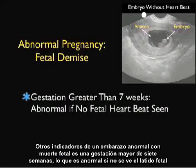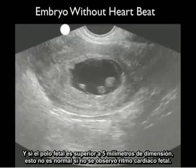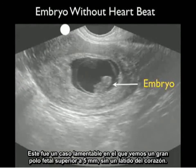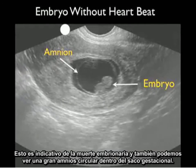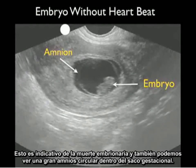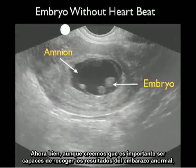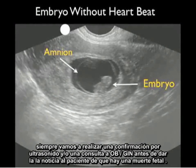Other indicators of an abnormal pregnancy with fetal demise include a gestation greater than 7 weeks with no fetal heartbeat seen, and a fetal pole greater than 5 millimeters in dimension with no fetal heartbeat seen. This was an unfortunate case in which we see a large fetal pole greater than 5 millimeters without a heartbeat, indicative of embryonic demise. We also see a large circular amnion within the gestational sac. I always get a confirmatory ultrasound and/or OB-GYN consultation before giving the patient news of fetal demise.